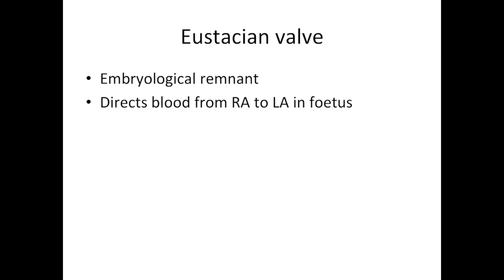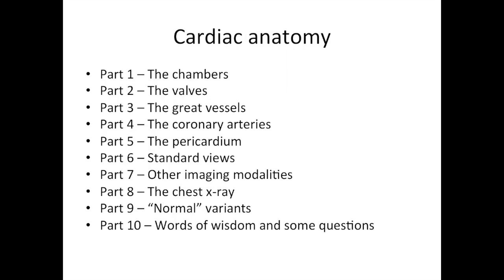There's another valve in the heart called the eustachian valve. This is an embryological remnant — you don't see it in everyone and on some people it's more prominent than others. In the foetus it directs blood from the right atrium to the left atrium. It's pretty difficult to see on CT and MRI, and it's unlikely to come up in exams.